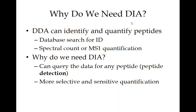Why do we need DIA? A lot of people say we can do DDA, generate identifications, do spectral counting. The answer in my mind is the ability to have no missing data — you can query DIA and say is this peptide there or not. It's not just a question of making an identification; it's being able to look for it at all. In DDA, you can't necessarily do that — if something isn't sampled by MS/MS, you can't tell if it's absent or simply not sampled.